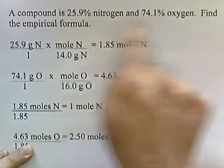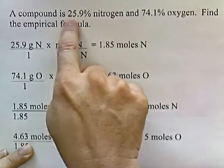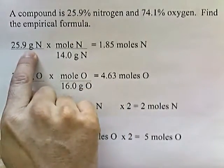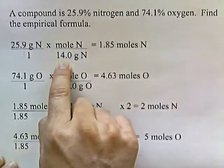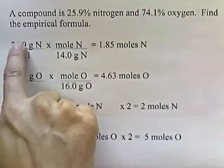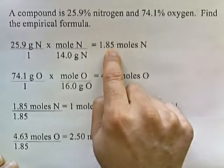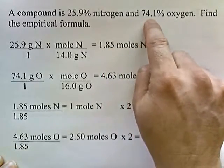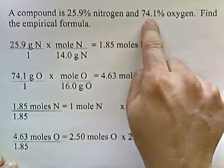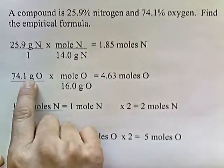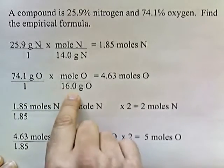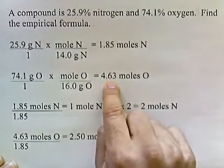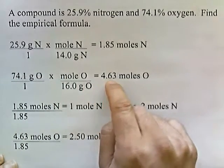Now we're going to convert each of these into moles. So we have 25.9 grams of nitrogen. On the periodic chart, nitrogen is 14 grams per mole. So this conversion tells us we have 1.85 moles of nitrogen. And then we take 74.1 grams of oxygen and convert that into moles. On the periodic chart, one mole of oxygen is 16 grams. So converting that leaves us with 4.63 moles of oxygen.